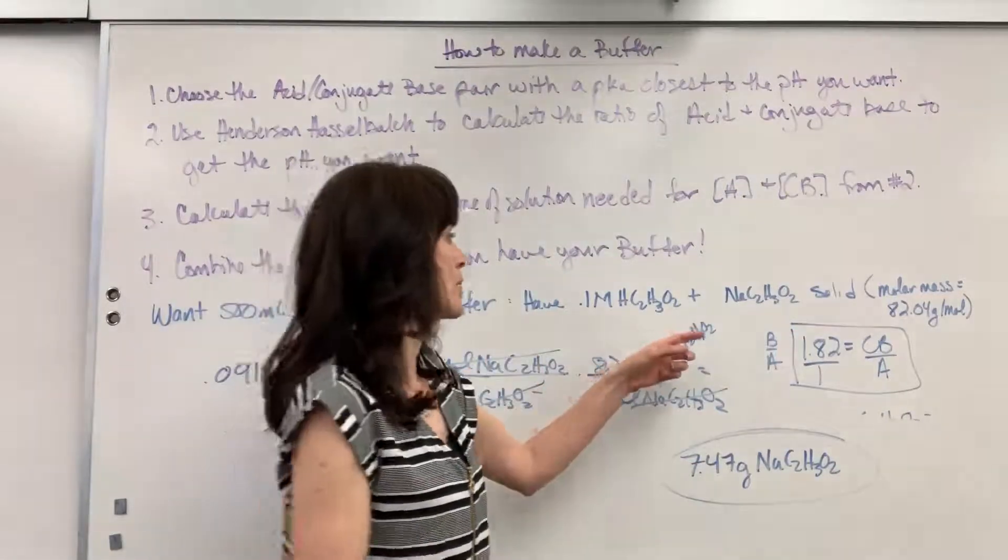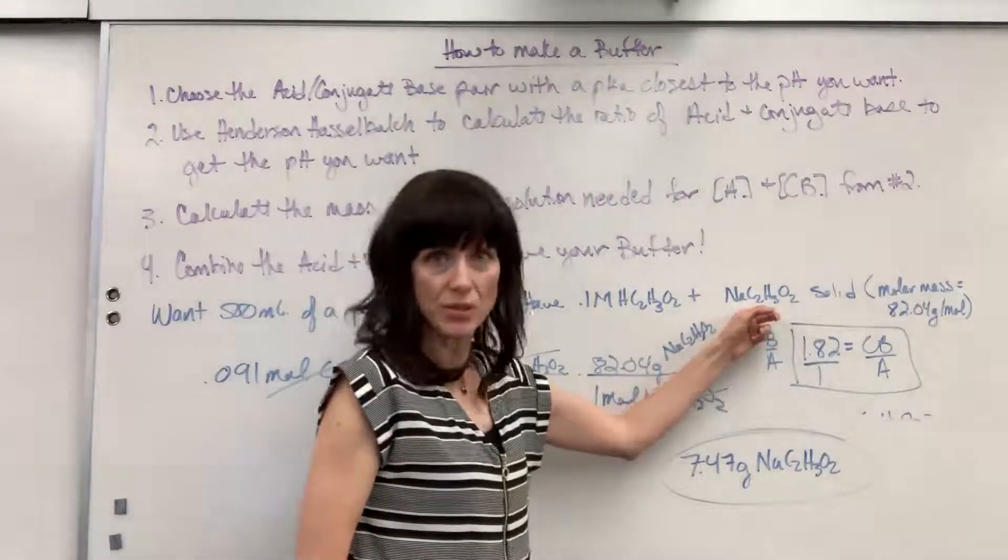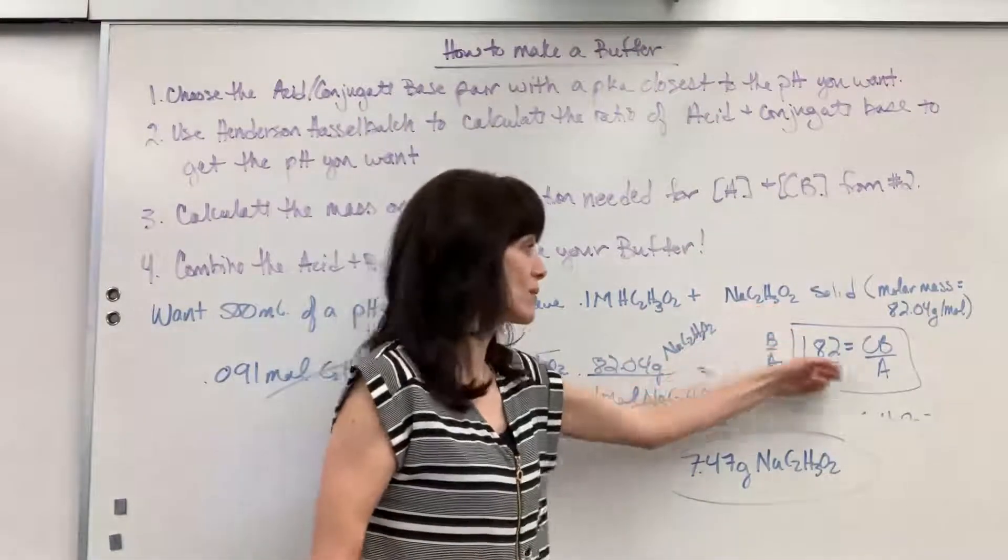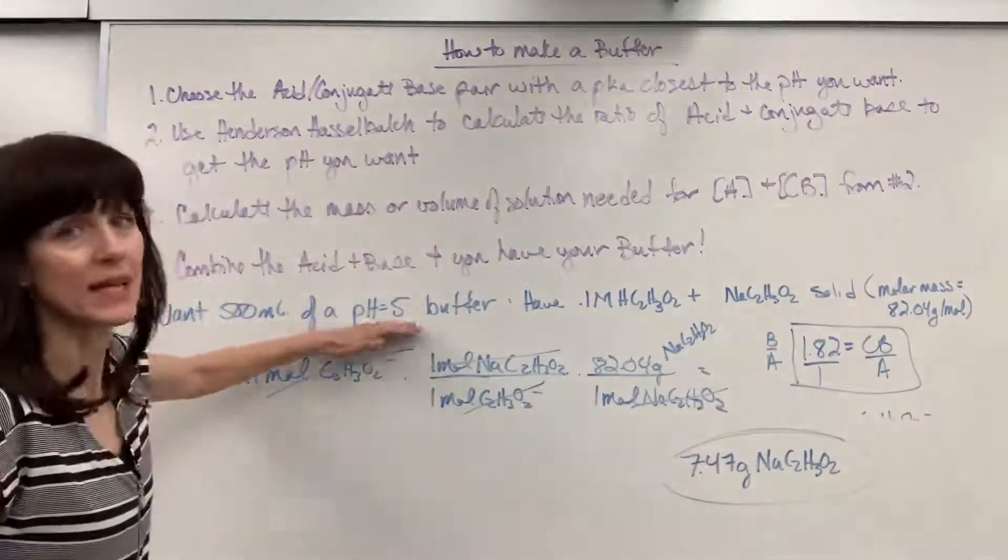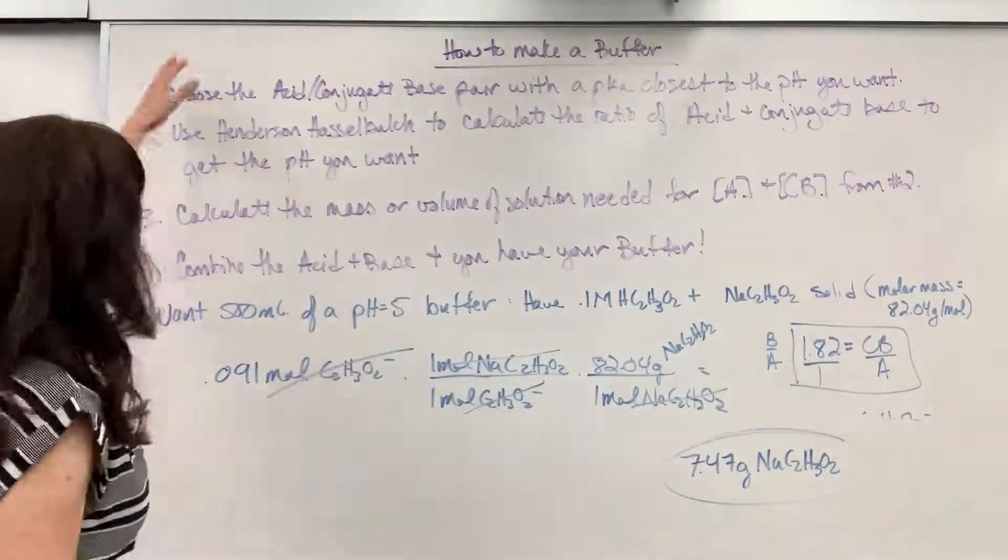Inside of here are the 0.05 moles of the acetic acid and the 0.09 moles of the acetate ion. And remember, that is a 1 to 1.82 ratio right here, and that's the ratio I need to have a pH of 5 buffer. So it's those four steps.